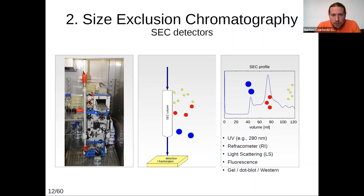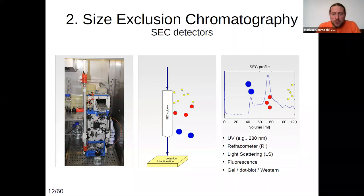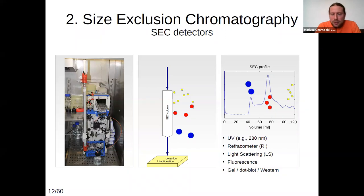Some HPLC machines can also be equipped with a refractometer — an RI detector — that detects changes in the refractive index of the solution leaving the column. It can detect both proteins and samples that don't absorb UV light, so it is very powerful but less popular in biological labs. A third type of detector is the light scattering detector, which I will talk about later on. We can also check fluorescence of fractions, or collect fractions and run them on a gel to detect a specific protein using western blot or dot blot techniques.